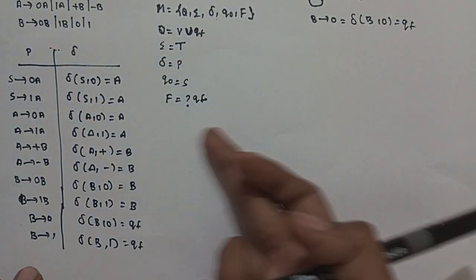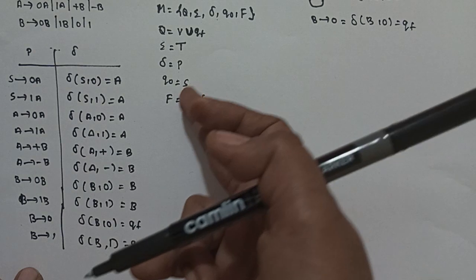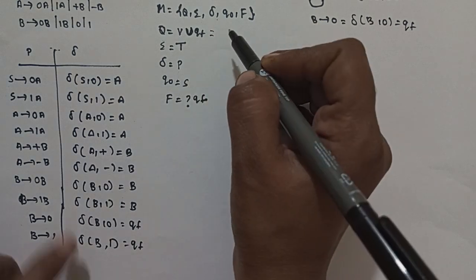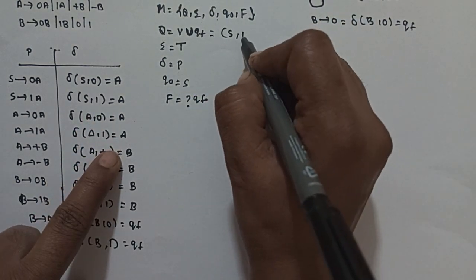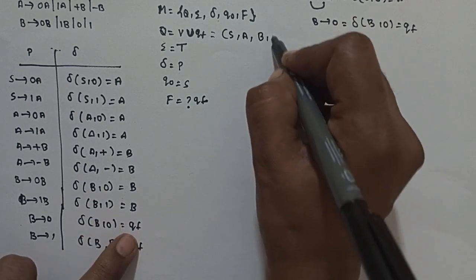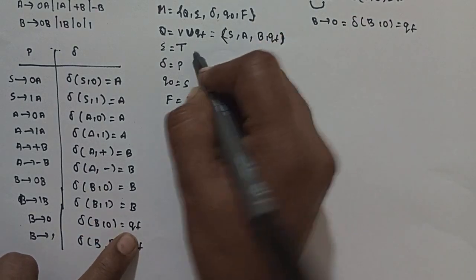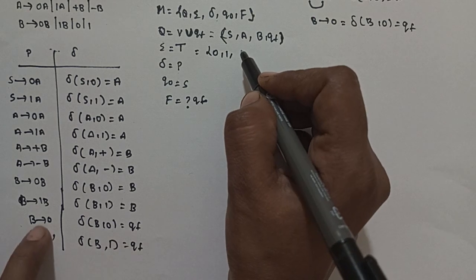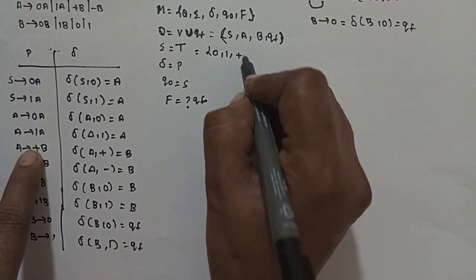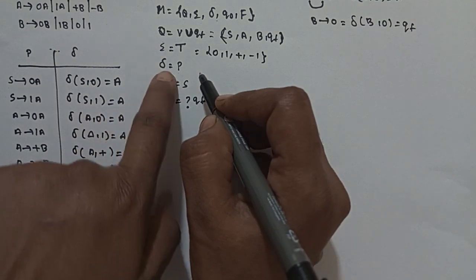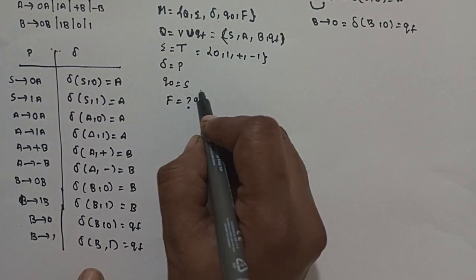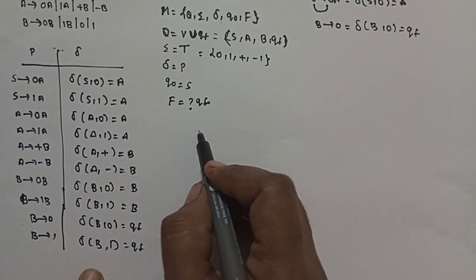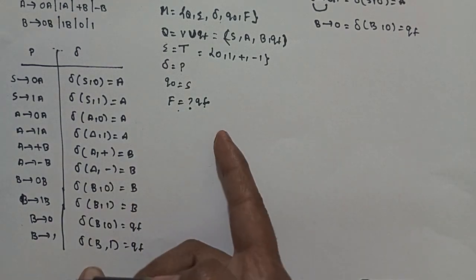The total number of states in our finite state automata is S, A, B, QF. The input symbols are 0, 1, plus, minus. The transition functions are already found. Q0 is the start state S, and the final state is QF.